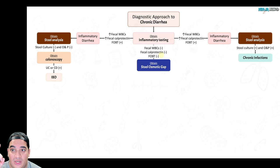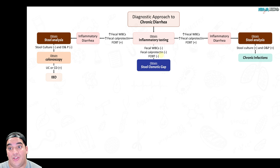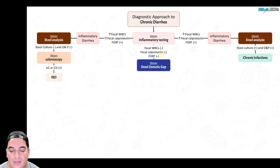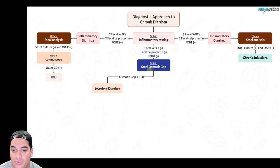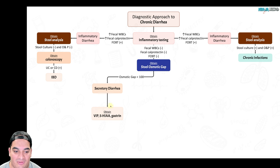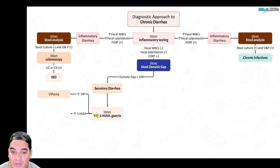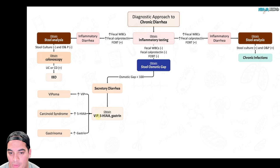If the stool osmotic gap is less than 100, that means the stool sodium and potassium are high — a lot of electrolytes — indicating secretory diarrhea. From there, check hormone levels: VIP, 5-HIAA (serotonin metabolite), and gastrin. Elevated VIP suggests VIPoma, elevated 5-HIAA suggests carcinoid syndrome, and elevated gastrin suggests gastrinoma.